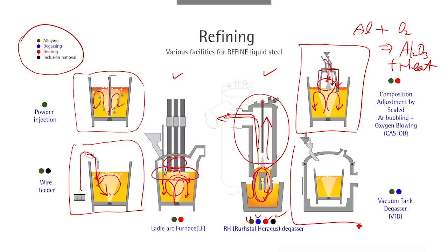The last facility is called the vacuum tank degassor, or VTD. The function of VTD is very similar to the RH degassor — the ladle containing liquid steel is put inside a vacuum tank and gaseous elements are evacuated. Regarding refining topics, we'll look at two important ones: inclusions and deoxidation, and degassing.